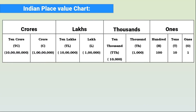This is the Indian place value chart. This place value chart helps us to recognize large numbers. In the Indian number system, we start grouping the number from the right in a group of 3 and then in groups of 2s.